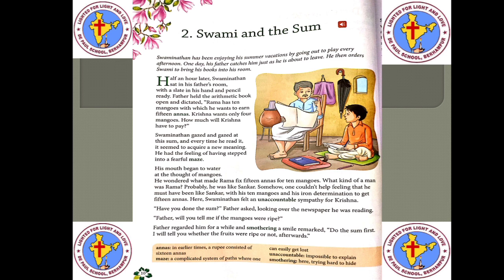Father, who was reading the newspaper, looked up and asked, 'Have you done the sum?' Swaminathan then asked, 'Father, will you tell me if the mangoes were ripe?' Father regarded him for a while, smothering — trying hard to hide — a smile, and remarked, 'Do the sum first. I will tell you whether the fruits were ripe or not afterwards.'